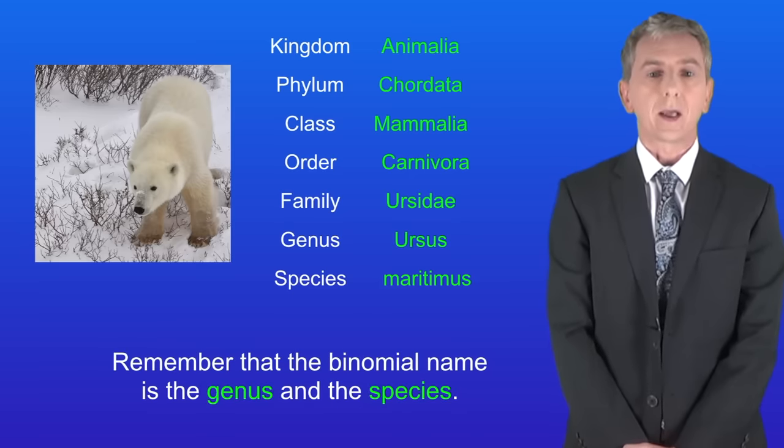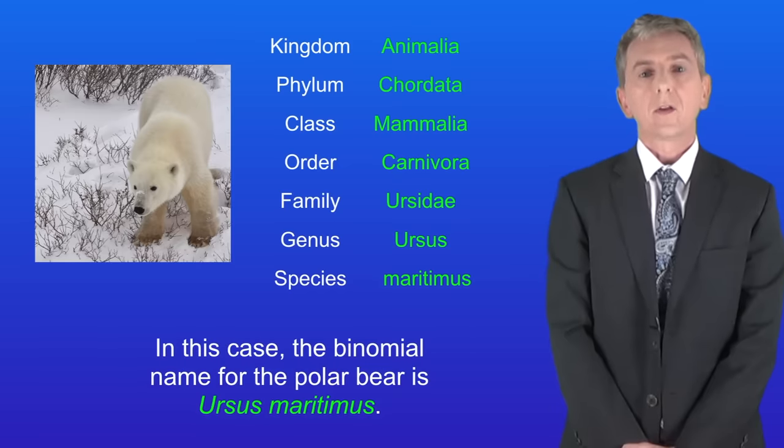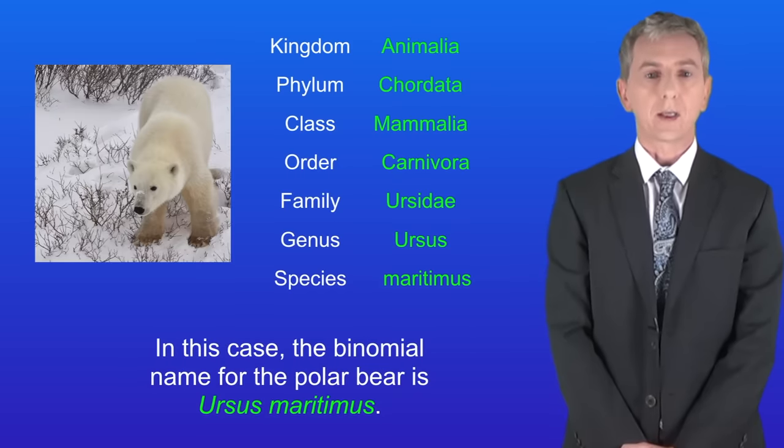Okay remember that the binomial name is the genus and the species. So in this case the binomial name for the polar bear is Ursus maritimus.